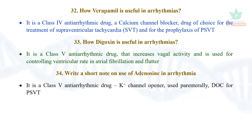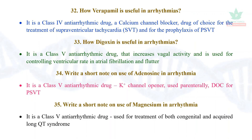Adenosine is a Class 5 anti-arrhythmic drug, a potassium channel opener used parenterally as the drug of choice for paroxysmal supraventricular tachycardia. Magnesium is a Class 5 anti-arrhythmic drug used for both congenital and acquired long QT syndrome. This concludes a brief overview of all anti-arrhythmic drugs, which will be useful for your exam preparations. I hope it will be useful for you.